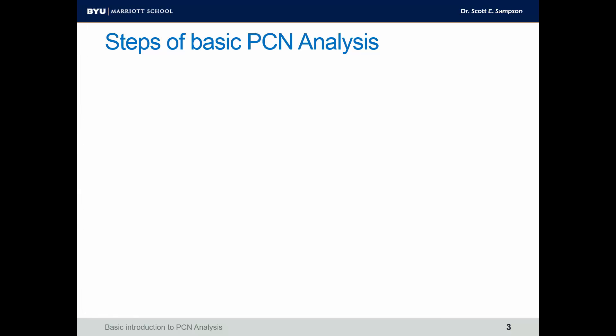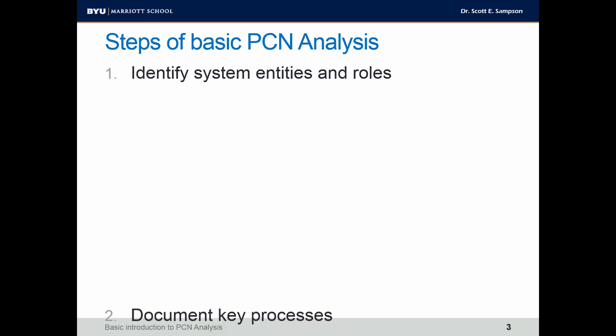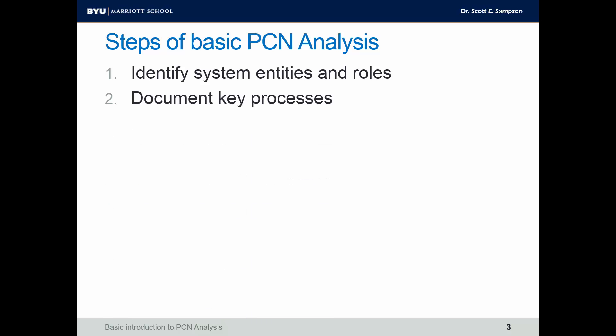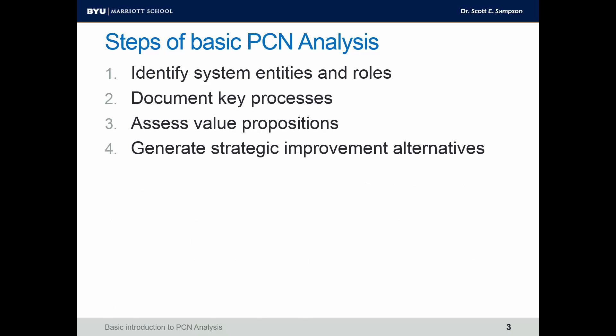What are the basic steps of PCN analysis? On a very basic level, we need to identify system entities and roles — those that are participating in the system — document key processes, assess the value proposition, and then generate strategic improvement alternatives.